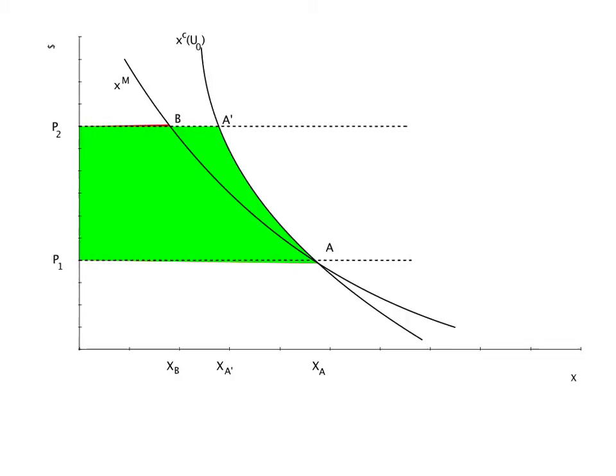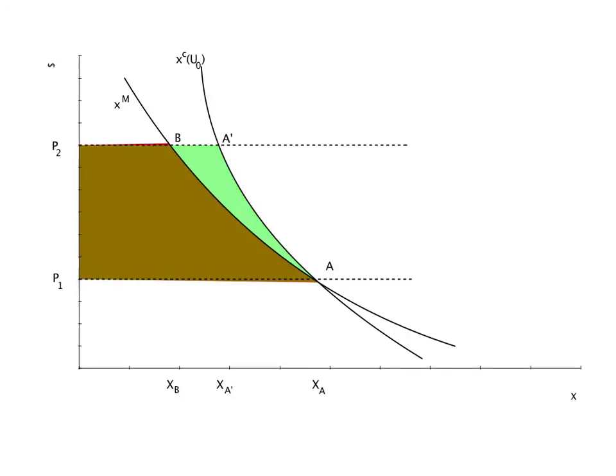Our usual measure of the change in consumer surplus, the area in brown to the left of the Marshallian demand curve between P1 and P2, understates the compensating variation loss in consumer surplus. The light green wedge captures the difference.